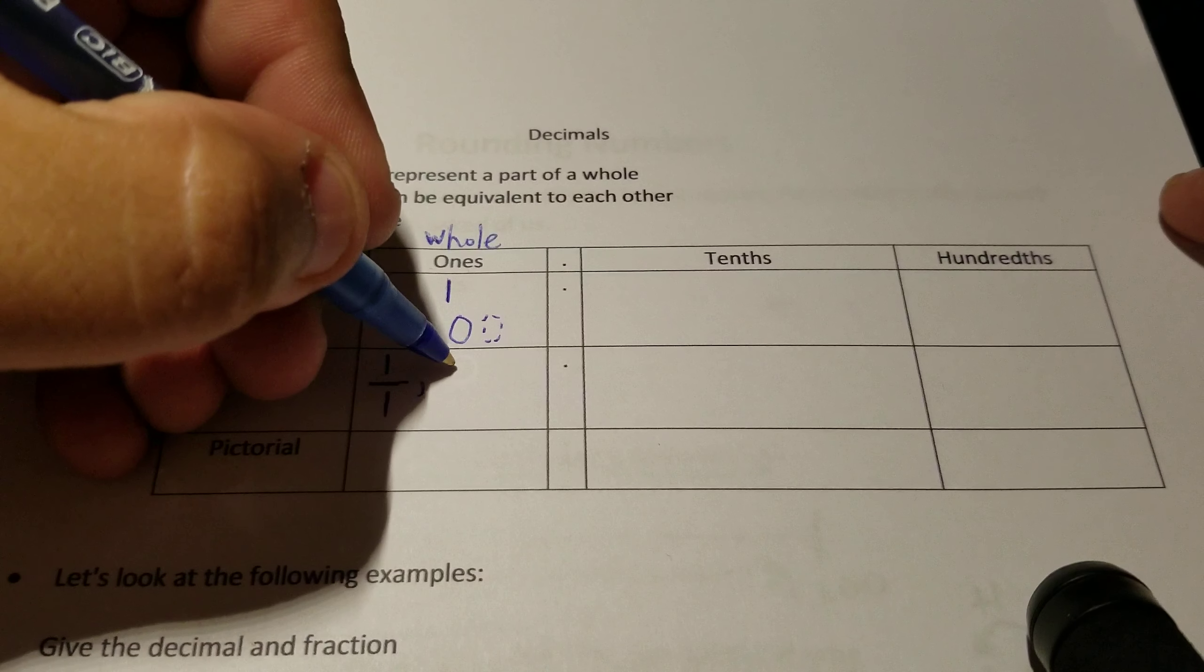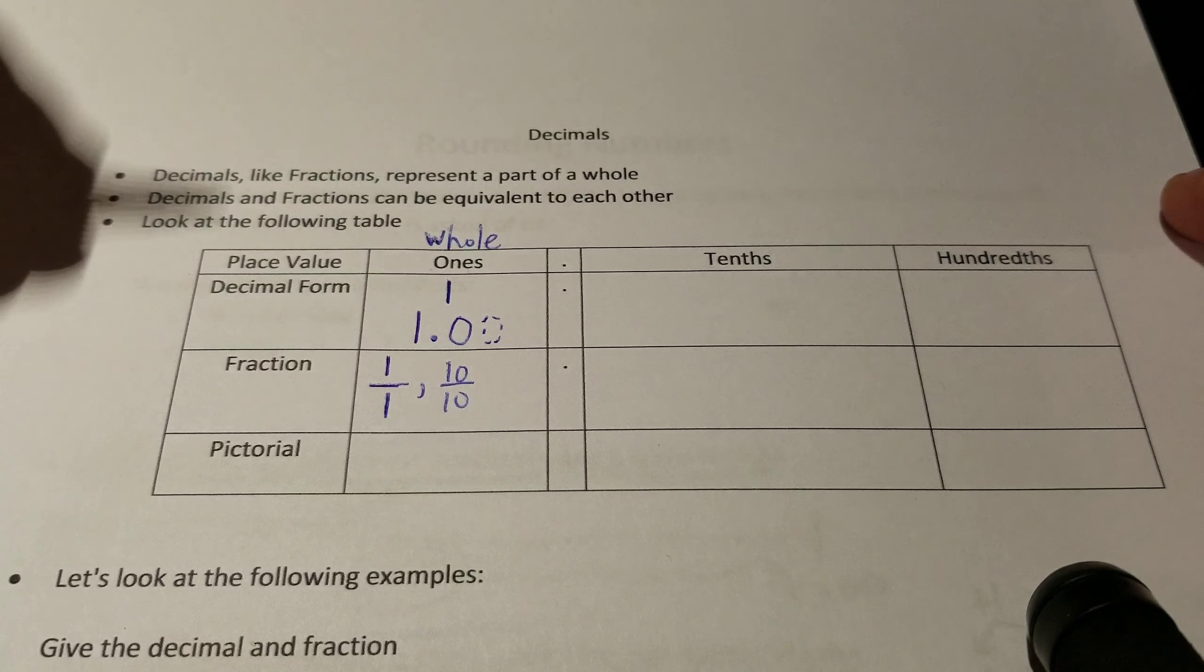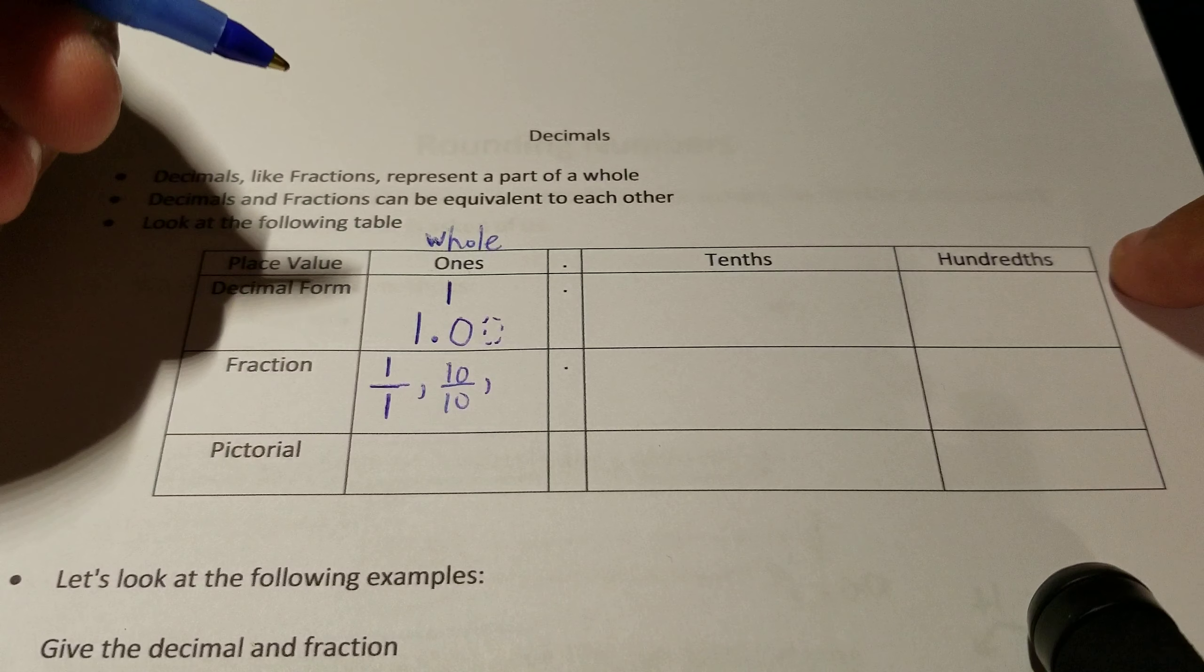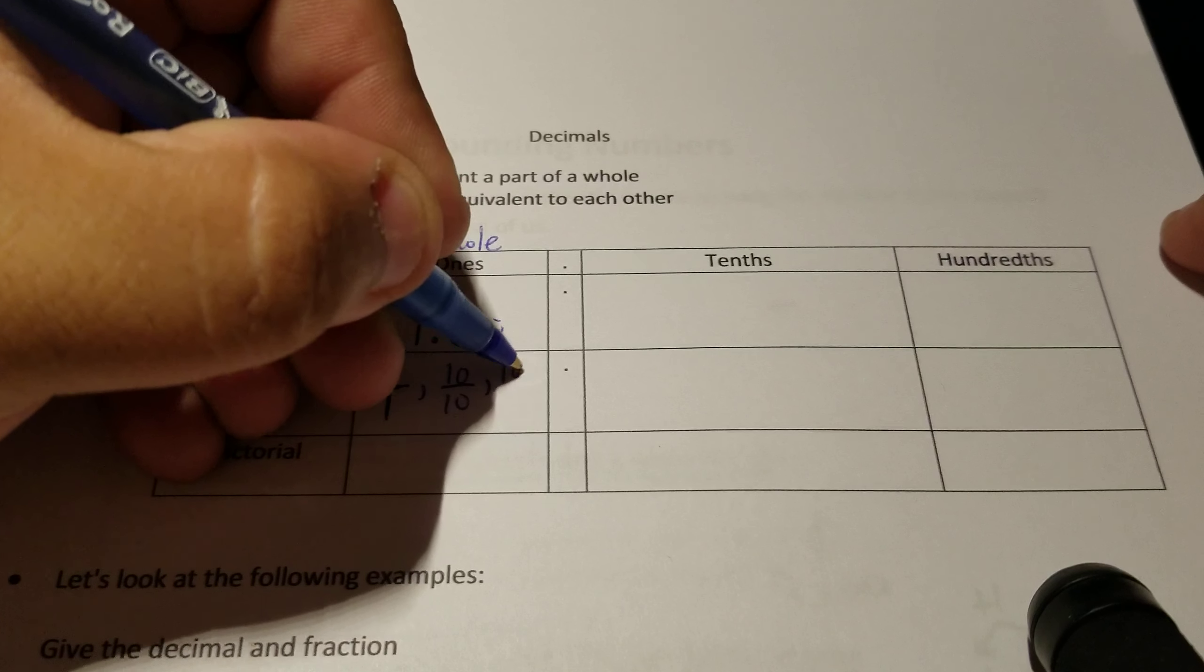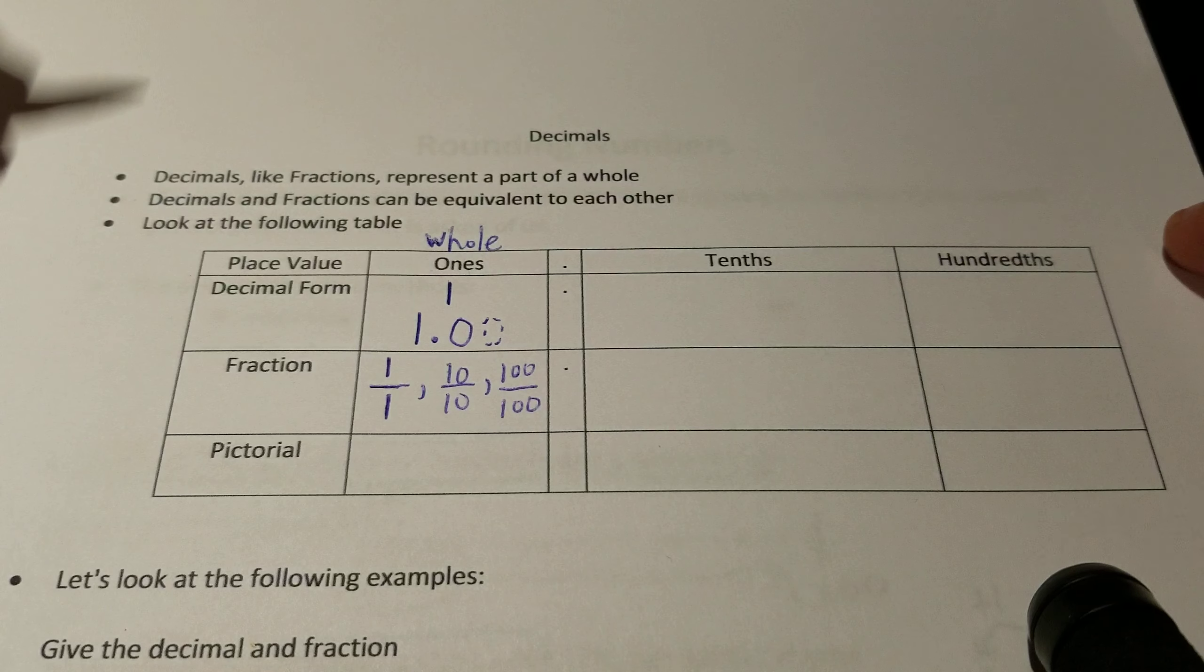In the case of tens, you would need ten tenths, because they're both equal, that makes it a whole. And in the case of the hundredths, you would need a hundred hundredths to make a whole.